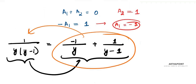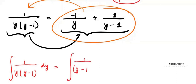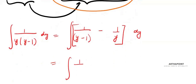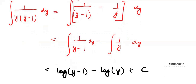So the integration of 1/(y(y-1)) dy becomes the integration of 1/(y-1) - 1/y dy. This gives log|y-1| - log|y| + c.